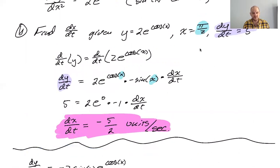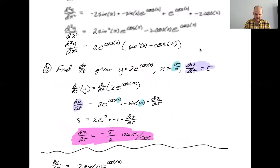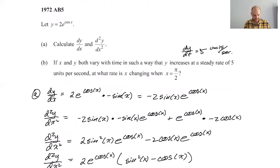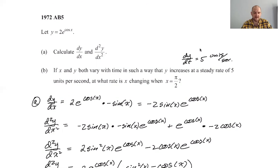If you're in Calc AB, no problem doing this potentially, but this got the answer. So I think the final answer is negative 5 halves units per second. That's all of 1972 AB5. I hope you found this helpful, and good luck.